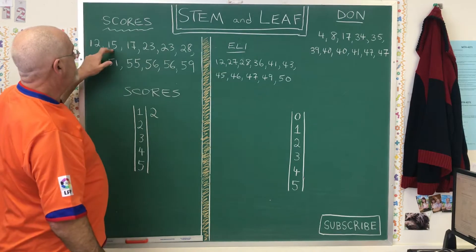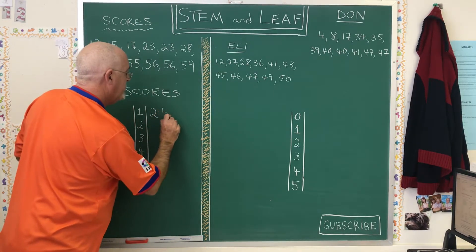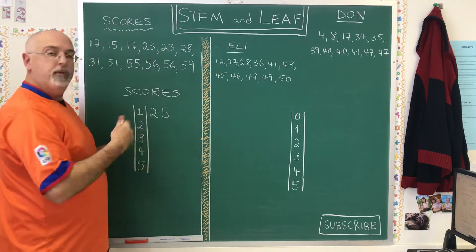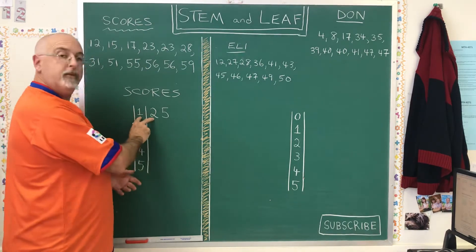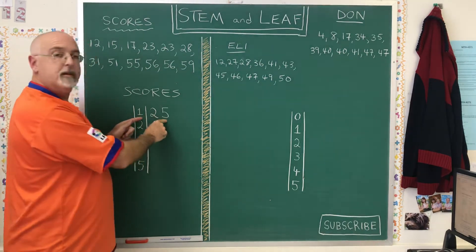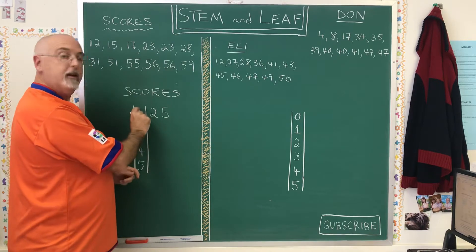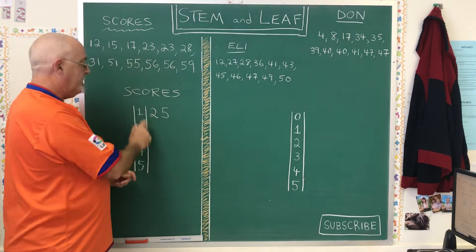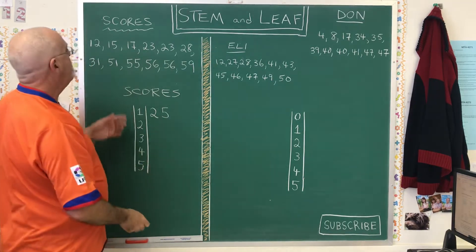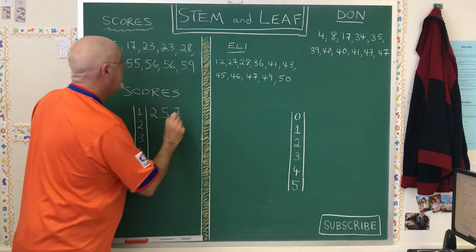The second number is 15, so I put a 5. Now reading the data, I can say 12 is my first value, 15 is my second value. I keep reusing the number between the bars as the first digit. And I have a 17, so I put a 7.